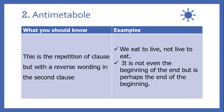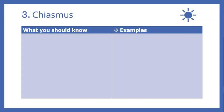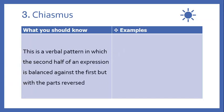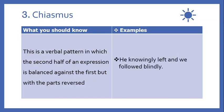The third figure of construction is chiasmus. Chiasmus is a verbal pattern in which the second half of an expression is balanced against the first, but with the parts reversed. Example: 'He normally left and we followed blindly.' Another example: 'Fair is foul and foul is fair' — notice the reversed balance in the second half.